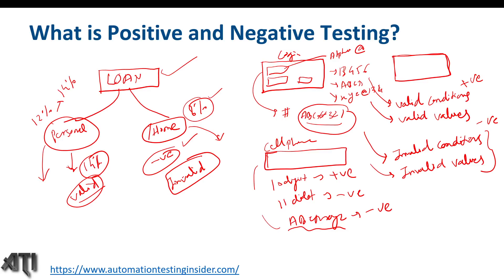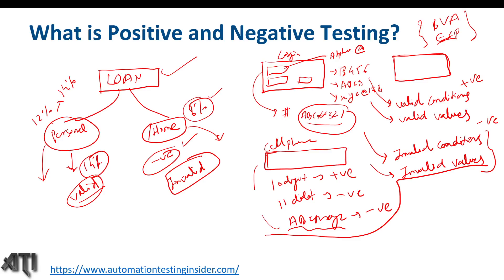Now let me take you to the next topic: a couple of techniques we can use when testing positive and negative scenarios. These are boundary value analysis and equivalence class partitioning. I will discuss them more in a separate video, but let me give an example here since we apply these techniques when deriving test cases. These are test design techniques. Let's say any input field takes numbers from 0 to 10.